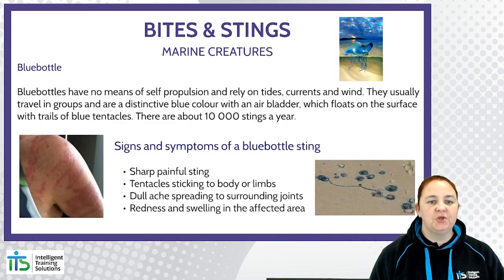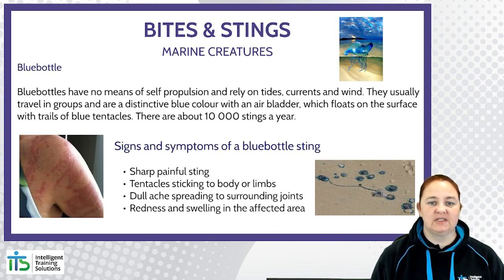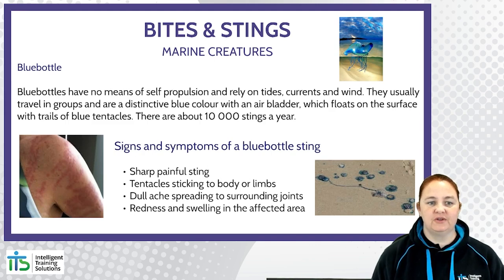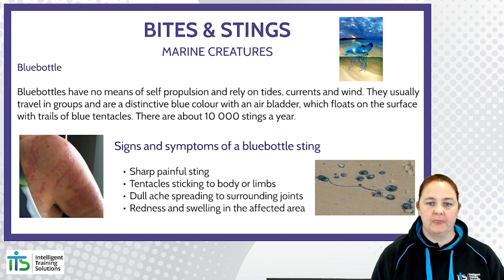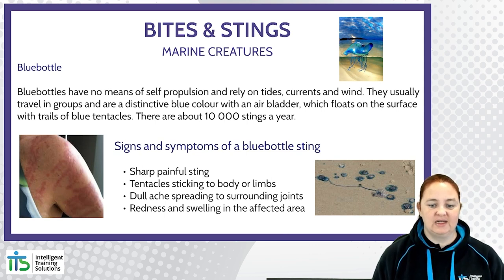Blue bottles have no means of self-propulsion and rely on tides, currents and winds. They usually travel in groups and are a distinctive blue colour with an air bladder that floats on the surface and trails blue tentacles. There are about 10,000 stings each year. Signs and symptoms can include a sharp painful sting, tentacles sticking to the body or limbs, dull aches spreading to surrounding joints, and redness and swelling in the affected area.